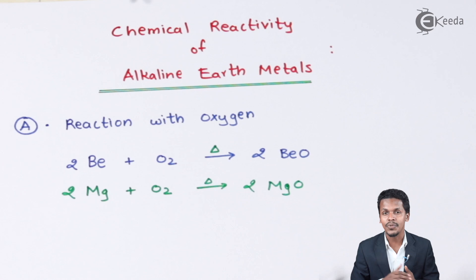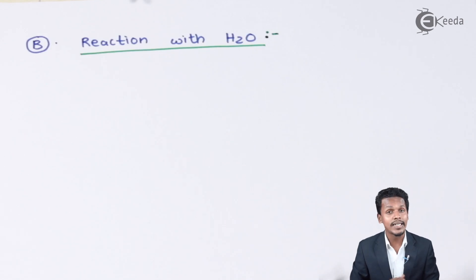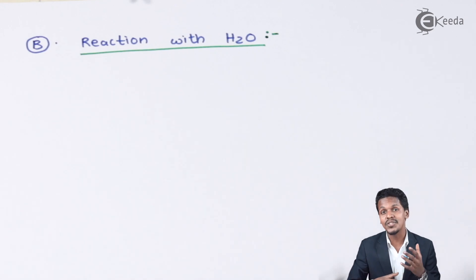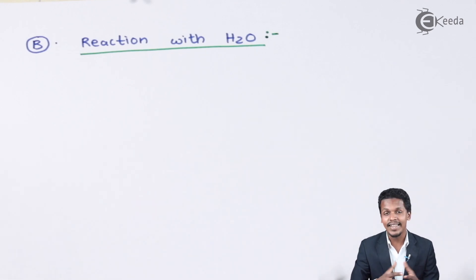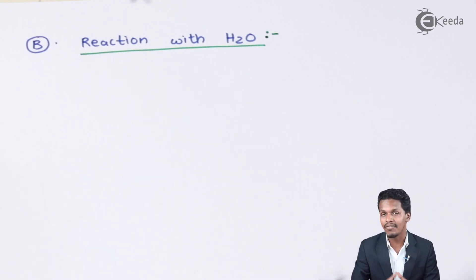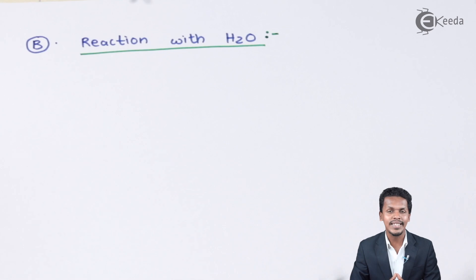Now let us discuss the reaction of alkaline earth metals with water. For the first element, beryllium — beryllium does not react with water at all. Compare this to sodium, which reacts vigorously with water and should never be placed in it. Although alkaline earth metals are also s-block elements and reactive, beryllium shows different behavior and is not reactive with water.